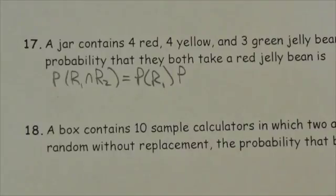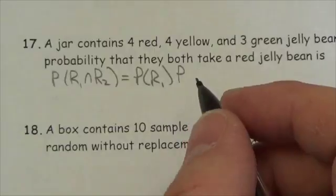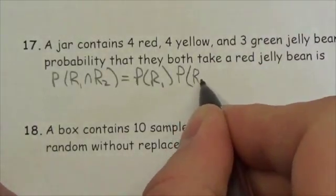they're not throwing them back in, which is what makes this dependent. It'll be the probability the second one is red given that the first one is red.